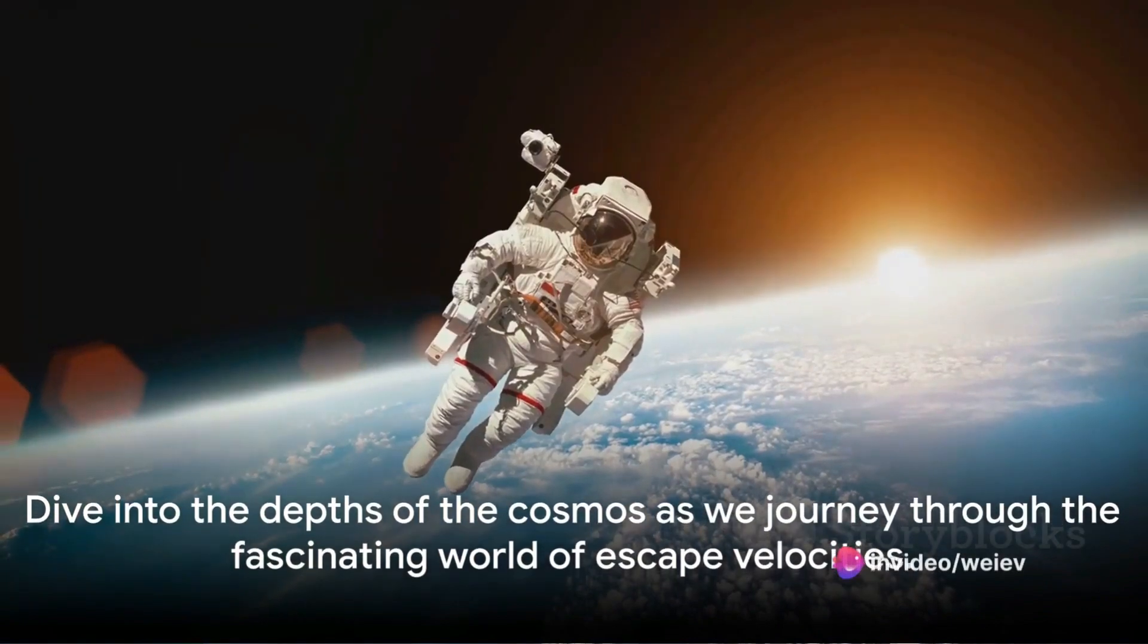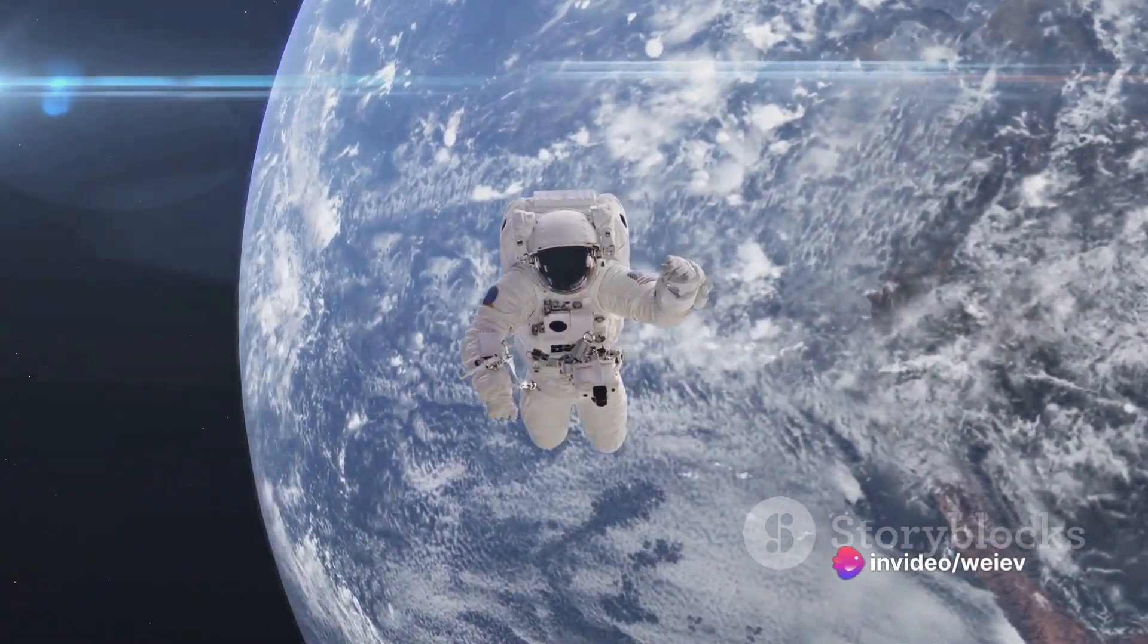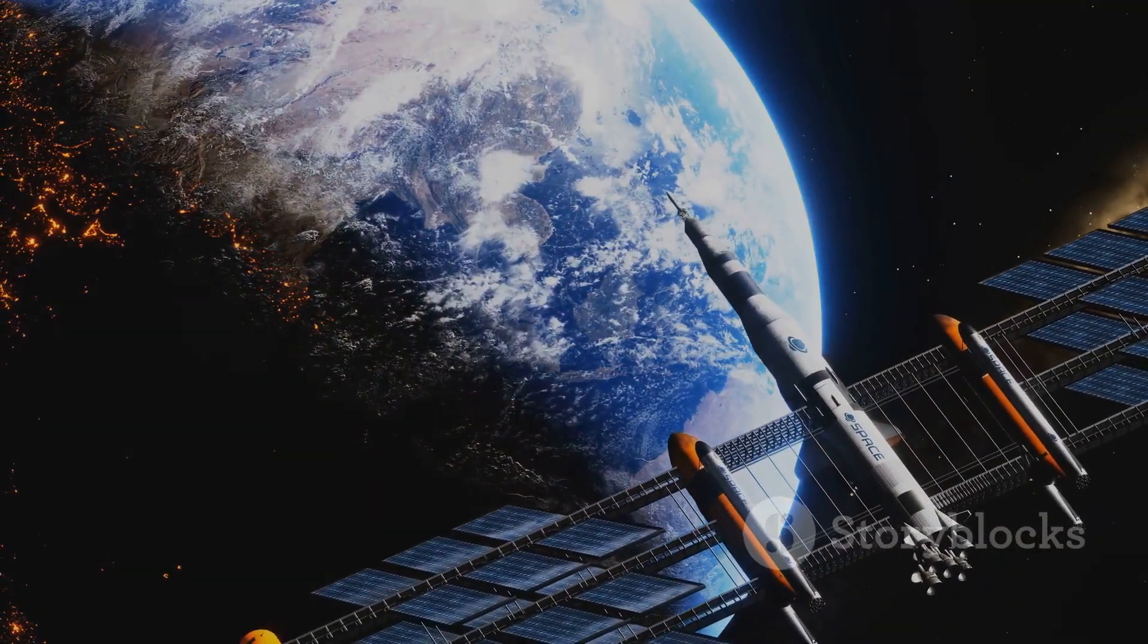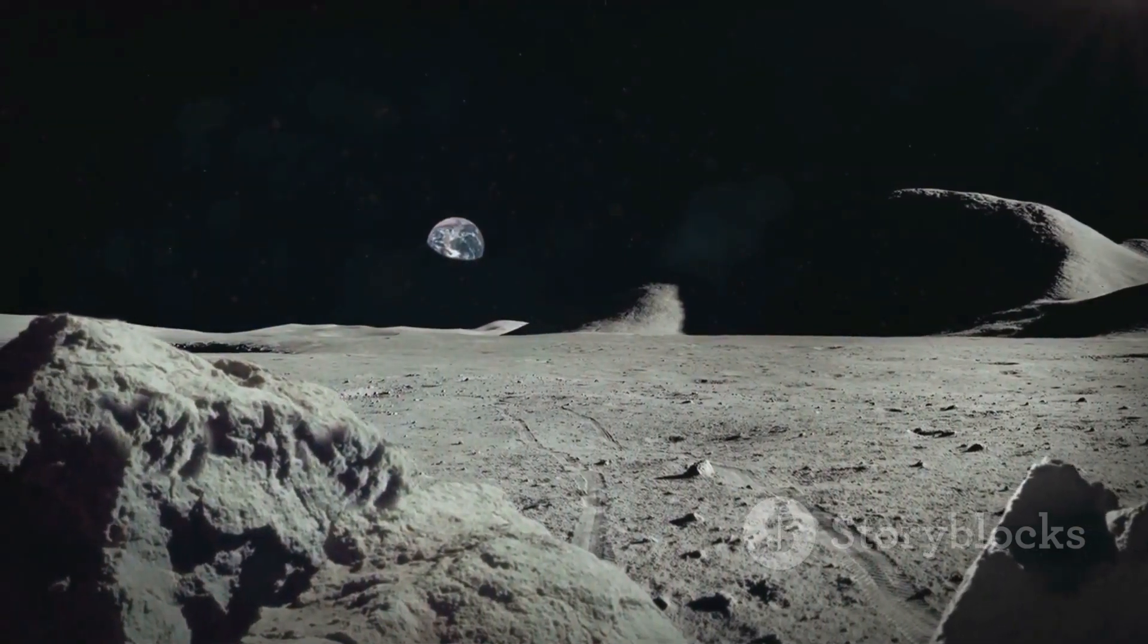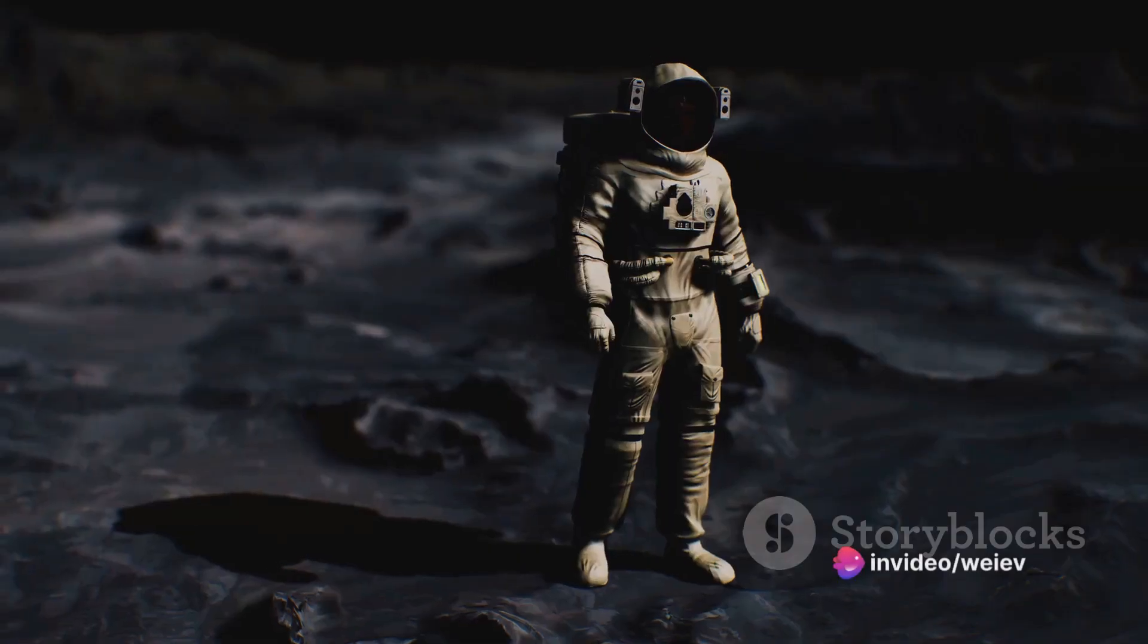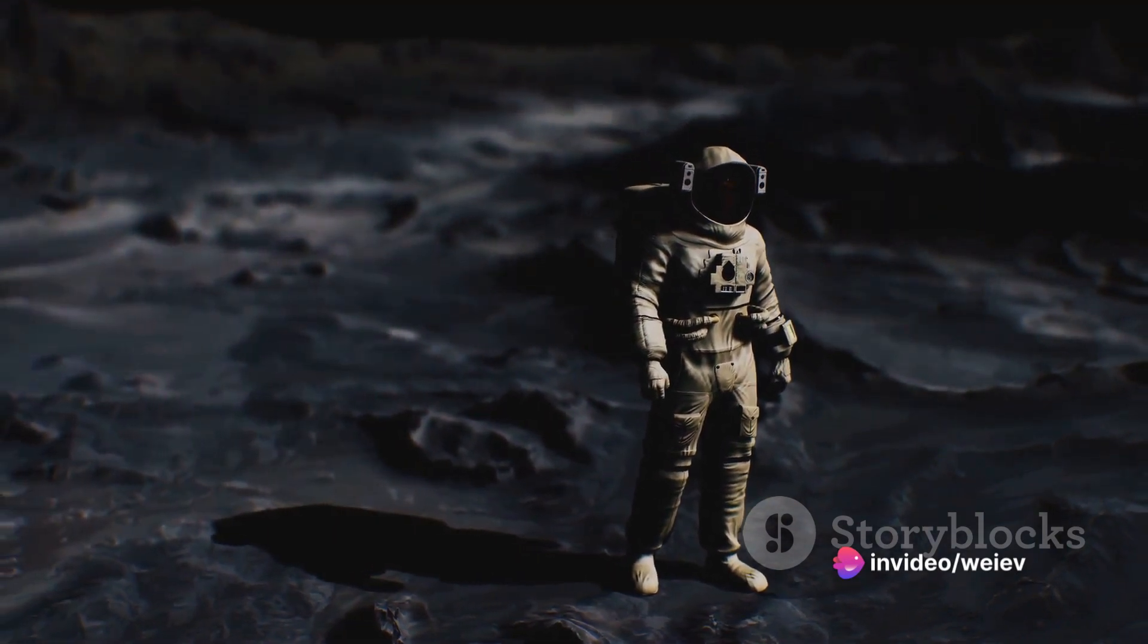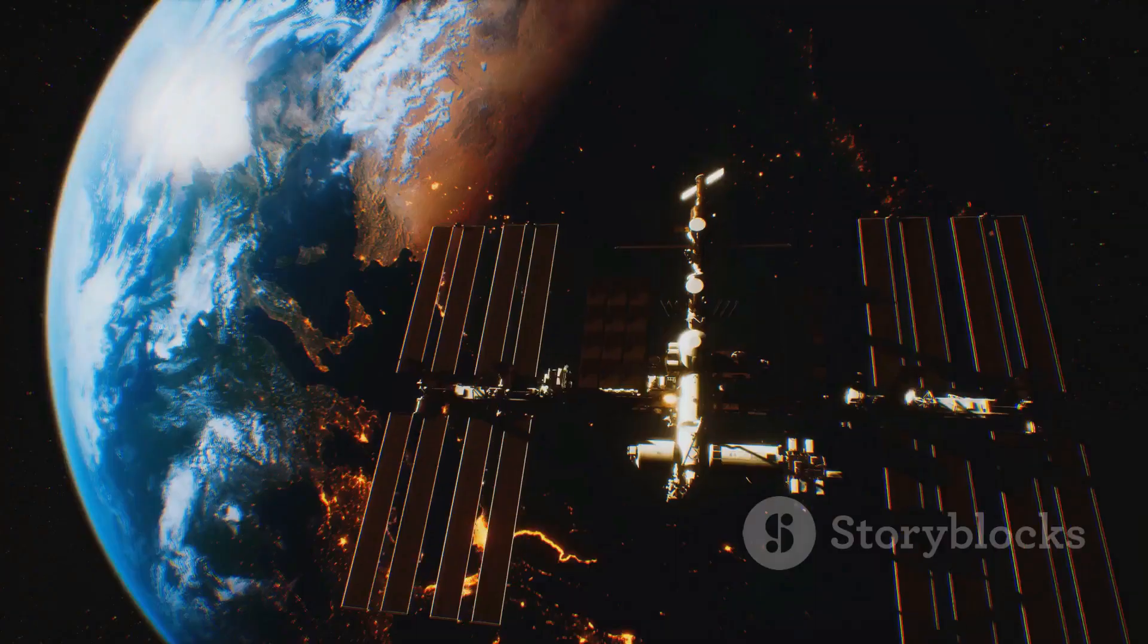Dive into the depths of the cosmos as we journey through the fascinating world of escape velocities. On the Moon's surface, the escape velocity is a mere 2.4 kilometers per second. On Earth, that number soars to 11.2 kilometers per second. Now imagine a celestial body with an escape velocity 60 times that of Earth. Yes, it's the Sun, boasting an escape velocity of 617.7 kilometers per second.